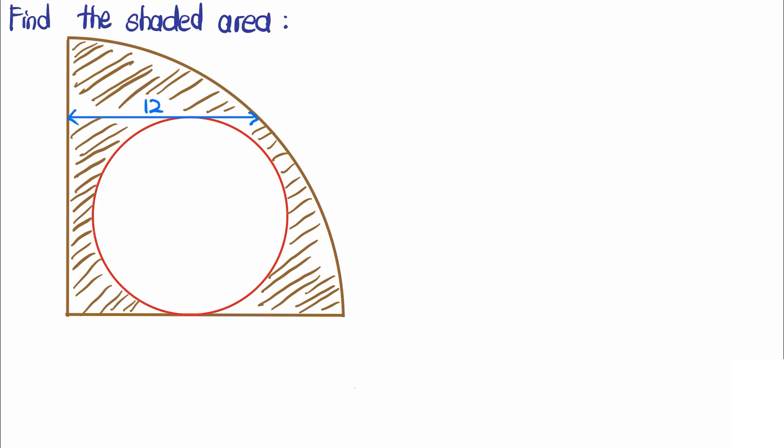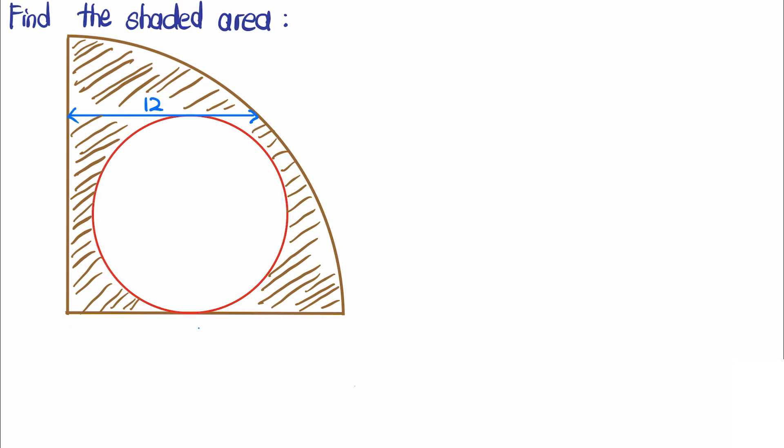To find the shaded area, we basically want to find the area of the quarter circle and subtract it with the area of the circle. We shall let the radius of the quarter circle be r, so we have that the area of the quarter circle is πr² over 4.